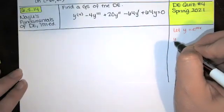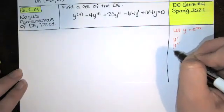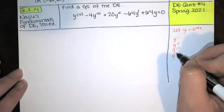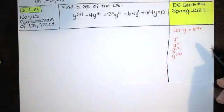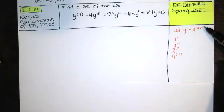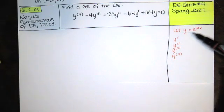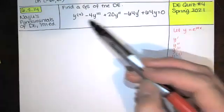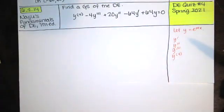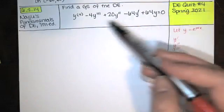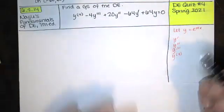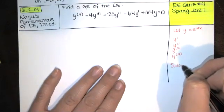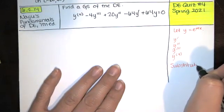Since it's a fourth order equation, we have to compute y prime, y double prime, y triple prime, and the fourth derivative of our guess for the solution. Then, because we're assuming that this actually works, when we substitute y and these derivatives into the differential equation, that should be satisfied. If this is truly a solution, when I plug these in, I should get zero. We're going to substitute into the DE from there.